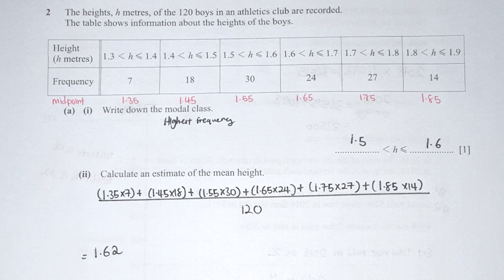For part A number 1, identifying the modal class means looking for the interval with the most frequency count. In our case, it will be 1.5 < H ≤ 1.6. For the mean, I took each midpoint, multiplied by its respective frequency, and divided by the total. The total is 120 boys as stated in the question. Dividing by 120 gives 1.62 meters as the final answer.